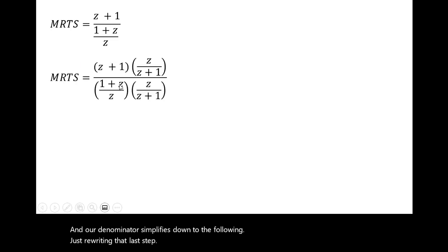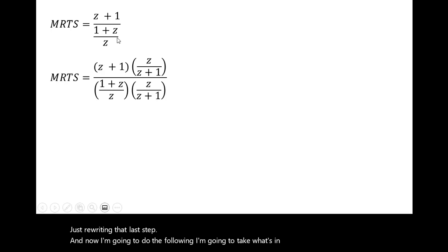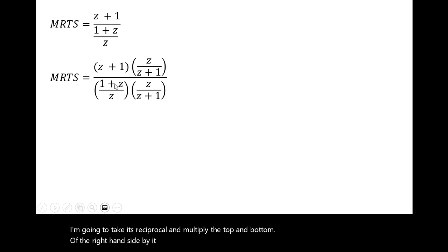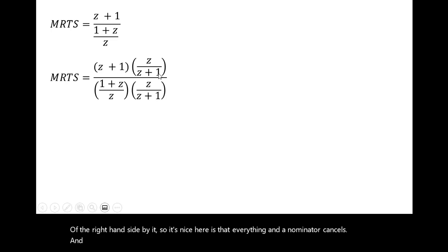Just rewriting that last step. Now I'm going to take what's in the denominator here and take its reciprocal and multiply the top and bottom of the right-hand side by it. What's nice here is that everything in the denominator cancels. And then the z plus 1 and the z plus 1 will cancel, and you're just left with the marginal rate of technical substitution equals z.